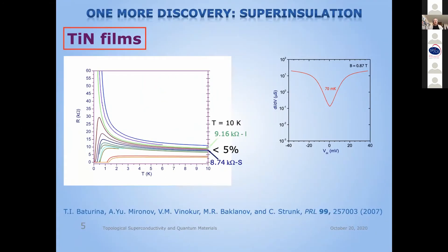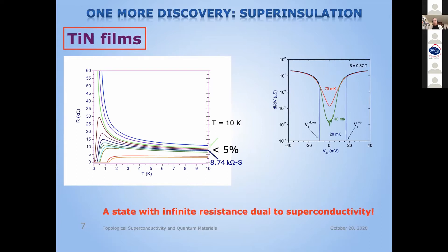Coming back to data obtained by Tatiana Baturina and her group: it was noticed that if you take an insulating sample very close to the superconductor-insulator transition, it shows remarkable properties. If you just measure the IV curve with differential conductance, what you can see is that as soon as you cool down the sample enough, it becomes super-resistant — the resistance is experimentally infinite. It was suggested that this state is dual to superconductivity, and it was called a superinsulator.